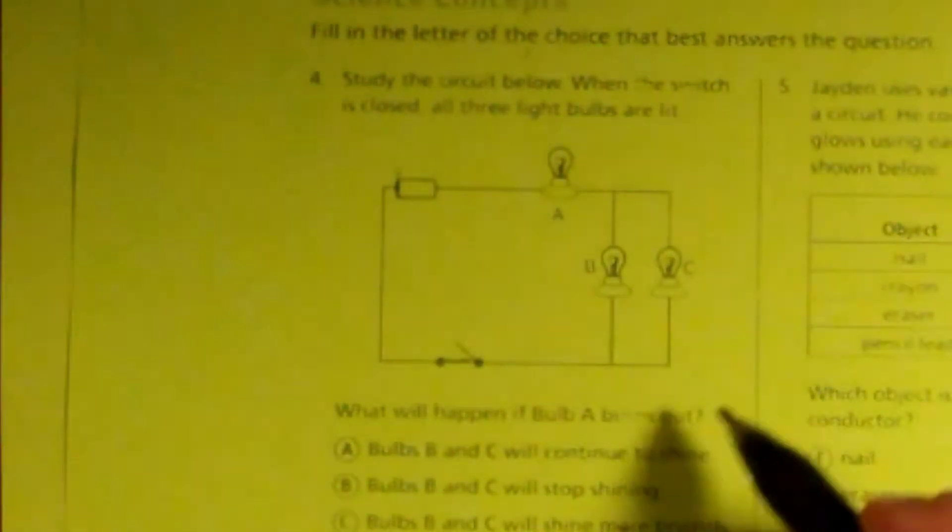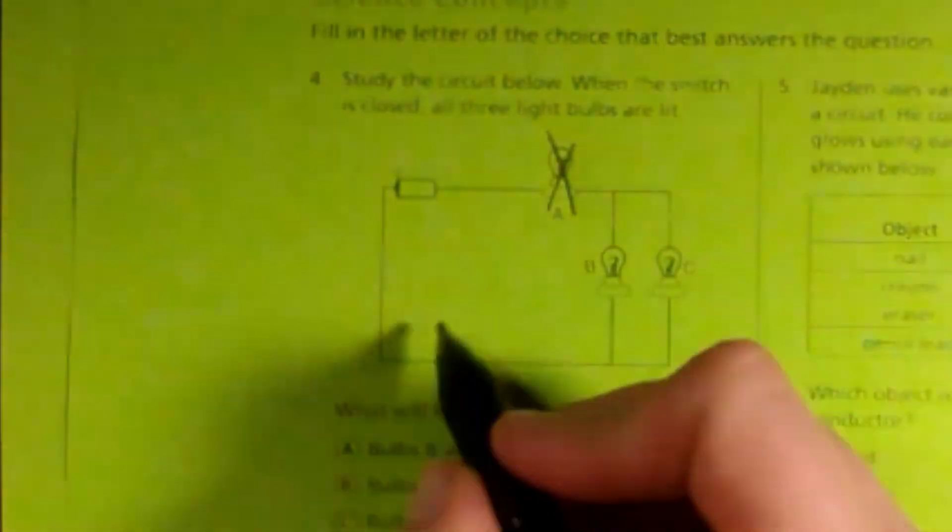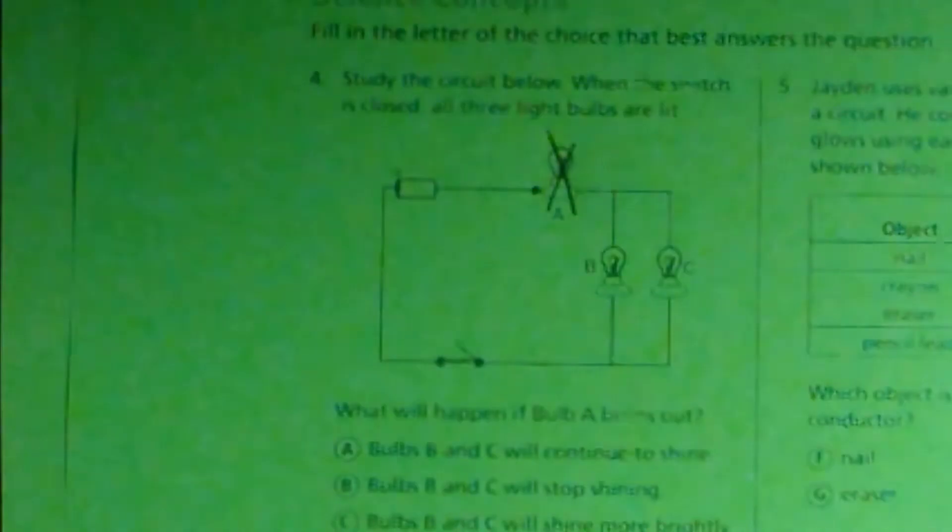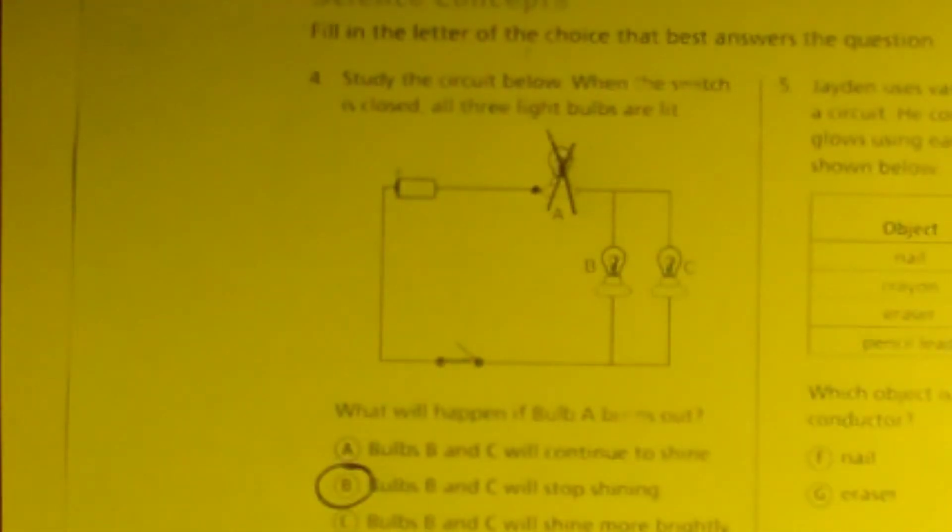What will happen if bulb A burns out? If bulb A burns out, then everything will burn out because the electricity will stop here and there isn't an alternative way for the electricity to go around. So if A goes out, then B and C will also stop shining.